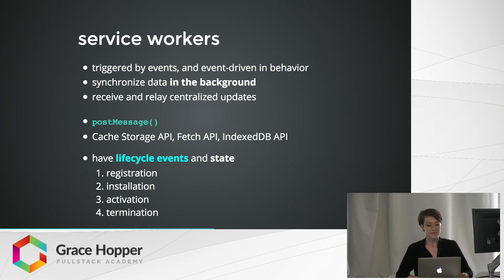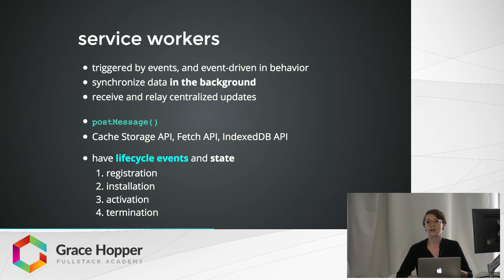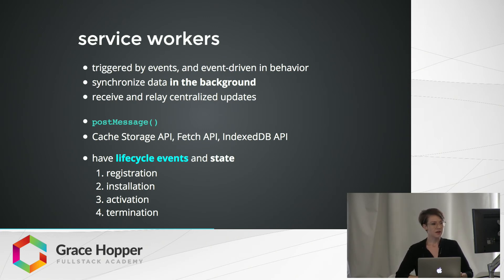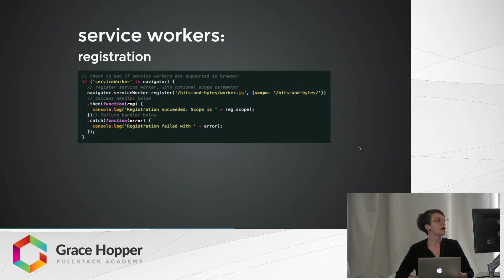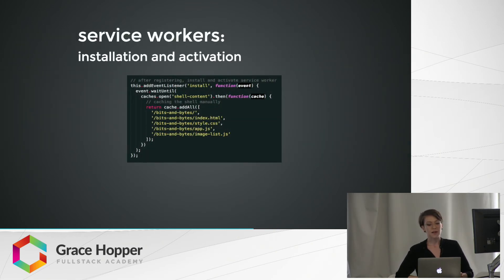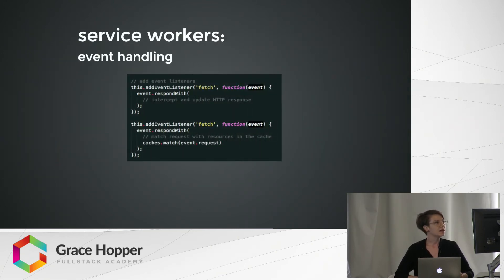Service workers have lifecycle events and state with extensive use of promises. You register a service worker with the browser, then the browser starts installation. If successful, the service worker continues to activation. Once activated, it can start handling network requests. And if a service worker is idle for too long or becomes redundant — replaced by another service worker — it gets terminated to save memory. Here is a code snippet of what registration looks like, with success and failure handlers. And here's what installation, activation, and caching would look like — you can write the caching manually or use a config file. Finally, here is what event handling looks like.